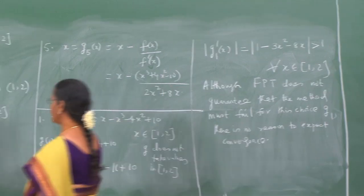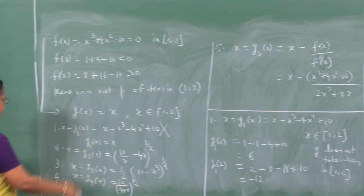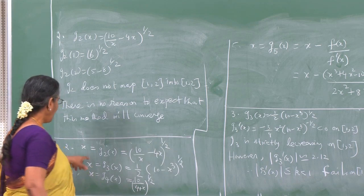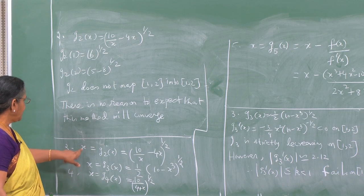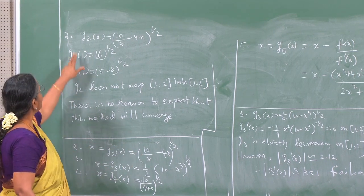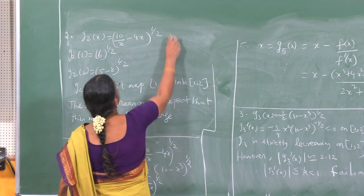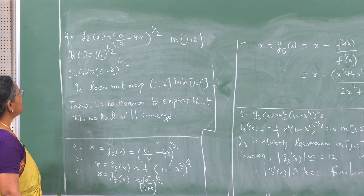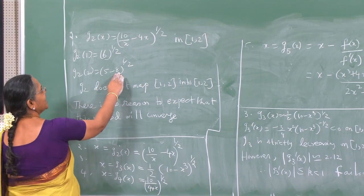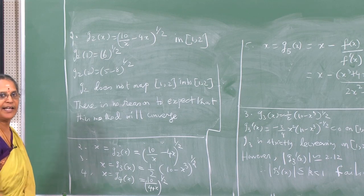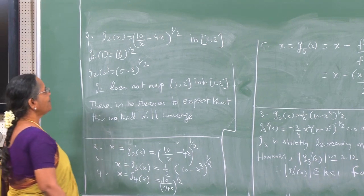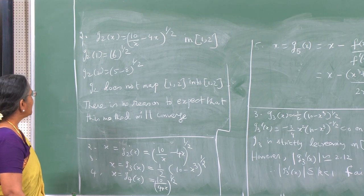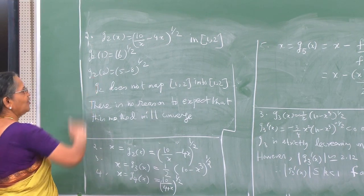Since the conditions are only sufficient, the fixed point theorem does not guarantee that the method must fail for g₁, but there is no reason to expect convergence. We therefore rule out this form and consider the second form g₂(x) = (10/x - 4x)^(1/2). We find g₂ also does not map [1, 2] into itself, so again there is no reason to expect convergence.